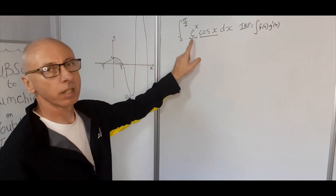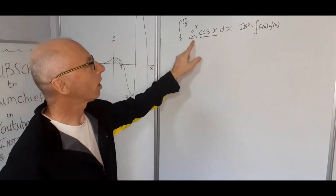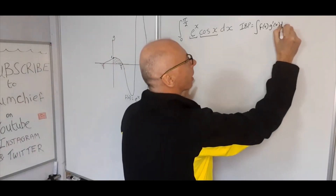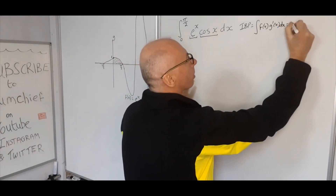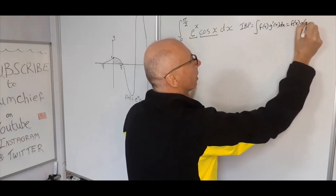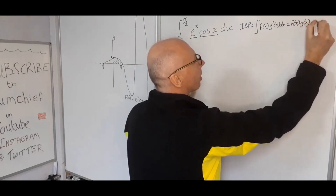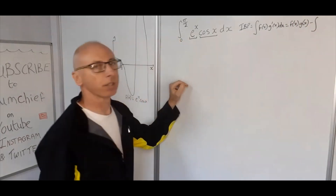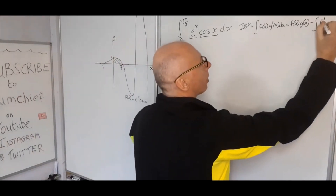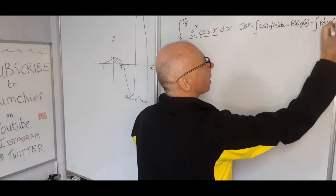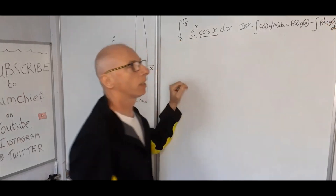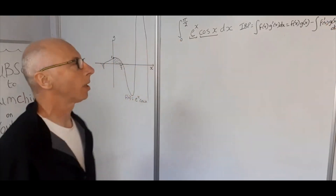So we've got the integral of f of x times g prime of x with respect to x, and that equals f of x times g of x minus another integral of f prime of x times g of x dx.